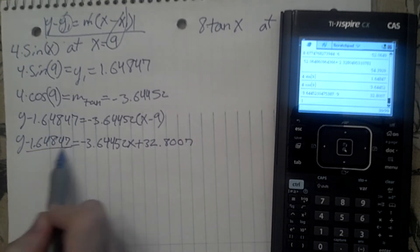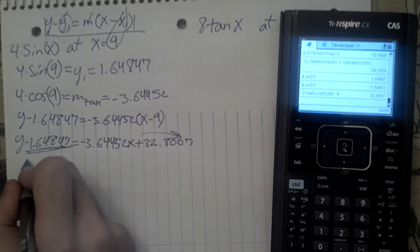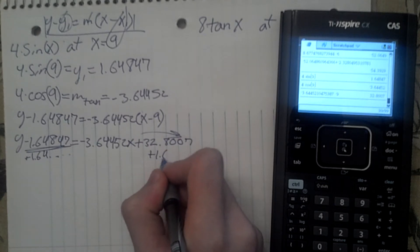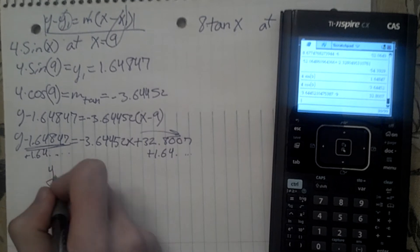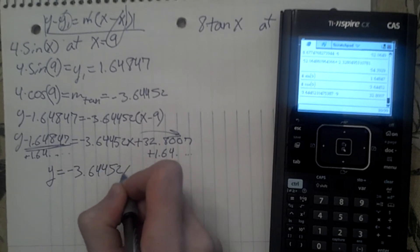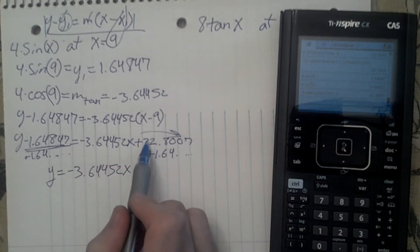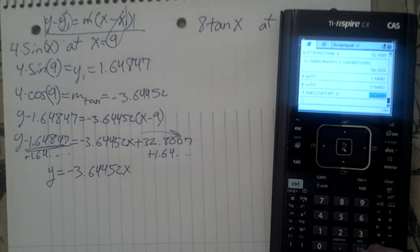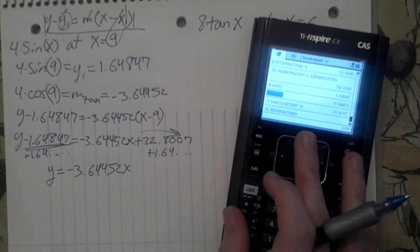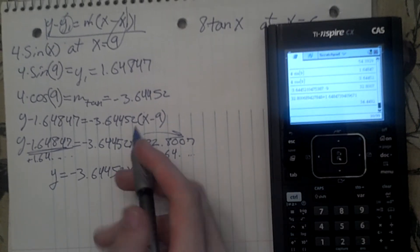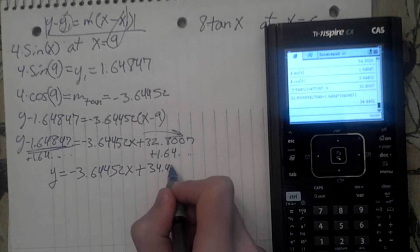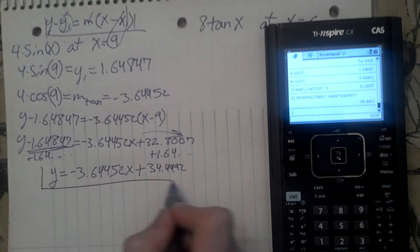Now, we want to get this over on this side. So we add 1.64 to both sides. So y equals negative 3.6452x. We add both of these numbers, so 32.807 plus 1.64847, which is going to be plus 34.4492. And that is all for that one.